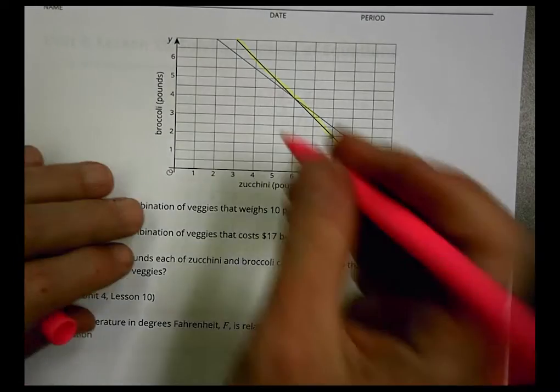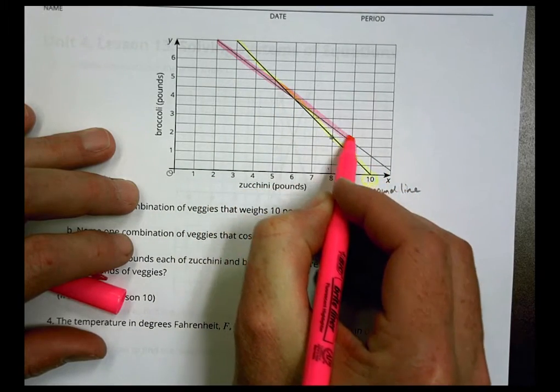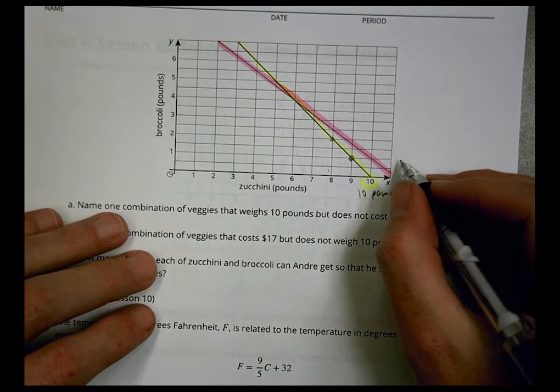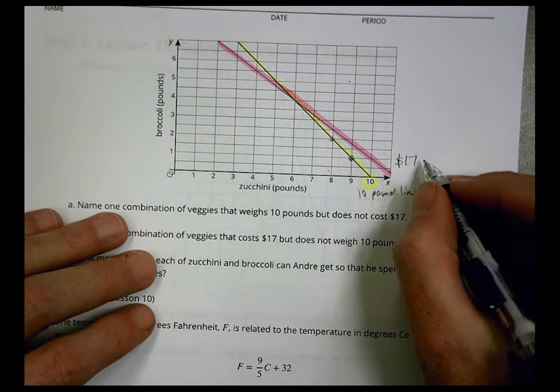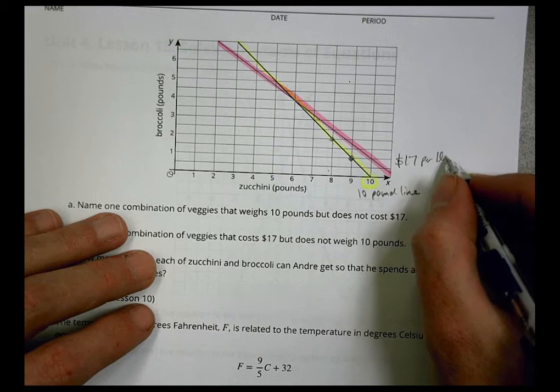The other line is this one here, and they describe that as being the place where the price per pound combination adds up to be the $17. So that's my $17 per pound line.